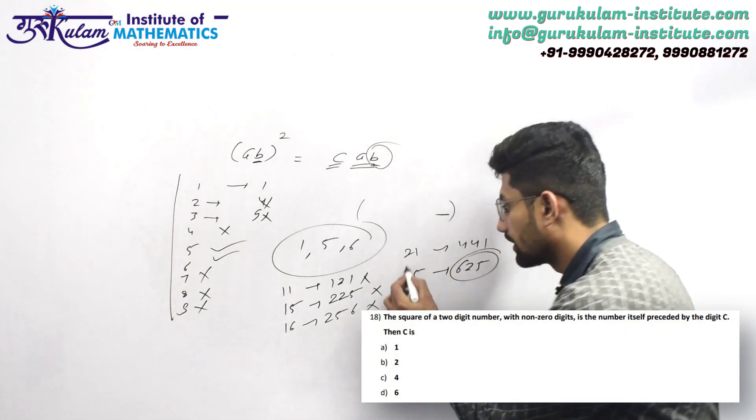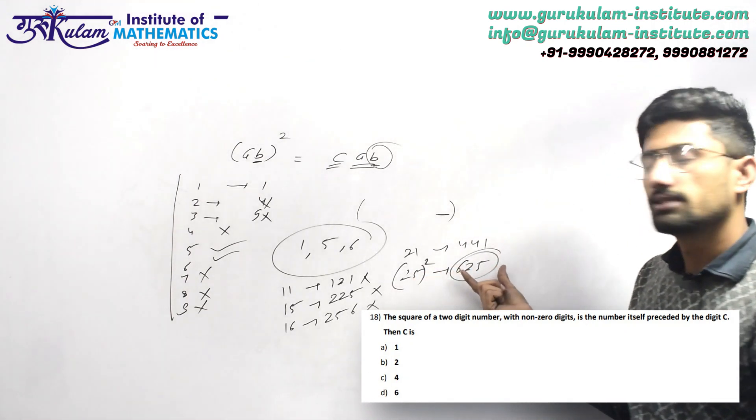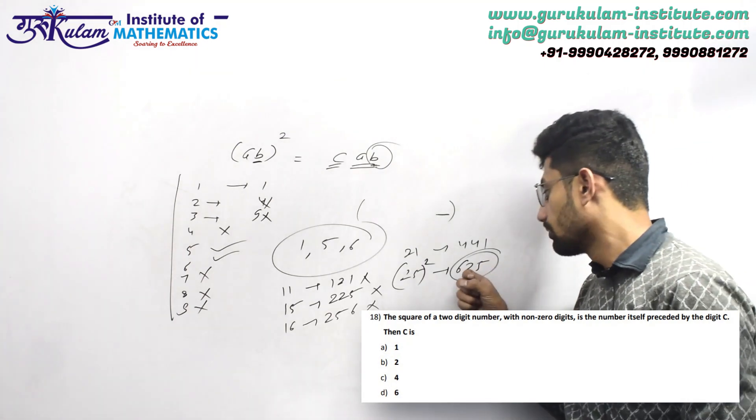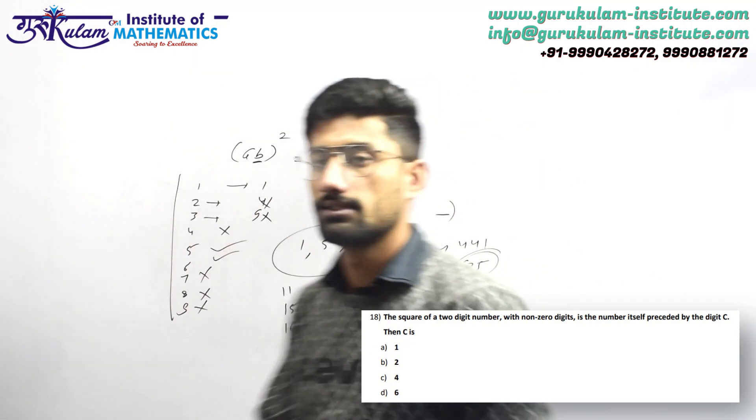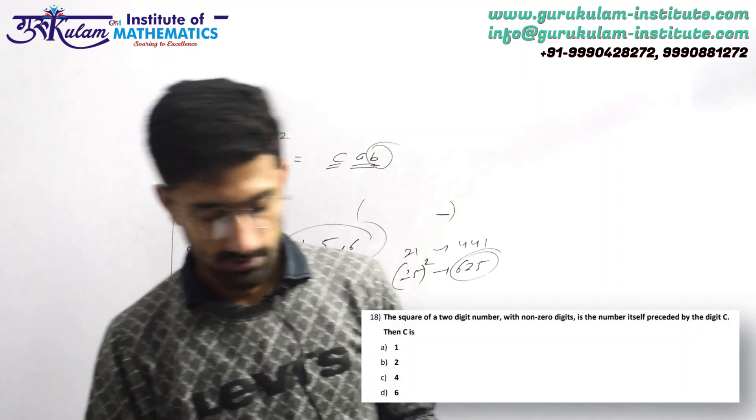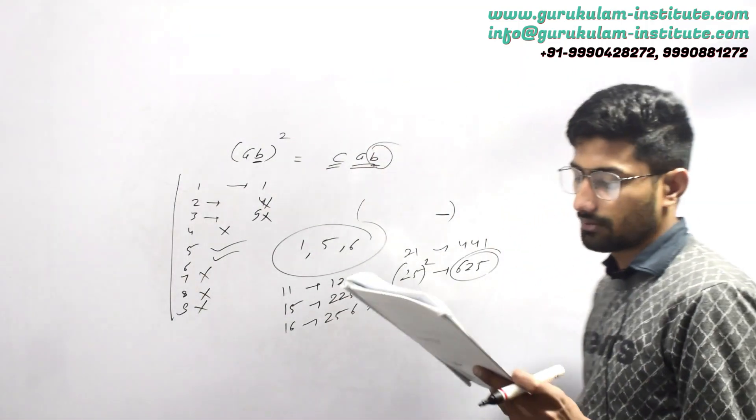ठीक है, 25 का स्क्वेर करोगे आप, क्या आ रहा है, 625, तो ये नमबर रिपीट कर गया, तो C की वैल्यू क्या आगी, क्लिया है, तो अंसरो जेगा आपका option number D। (Okay, if you square 25, you get 625, so this number repeats, so what is the value of C, it's clear, so your answer will be option number D.)